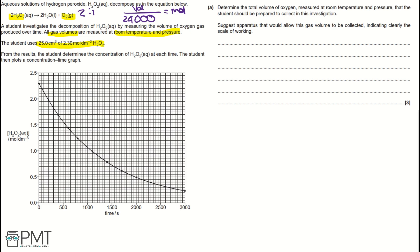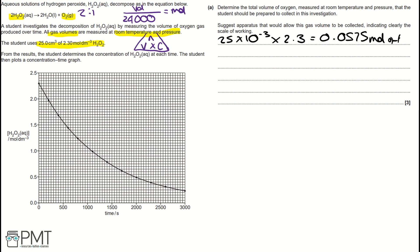Therefore, we're going to use the equation triangle where moles = volume × concentration. Firstly, we use this to work out the number of moles of hydrogen peroxide. The number of moles equals 25 × 10⁻³ dm³ — converting cm³ into dm³ — multiplied by 2.3, giving us 0.0575 moles of hydrogen peroxide.